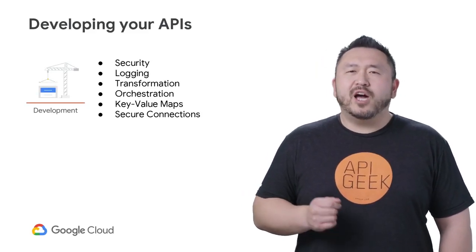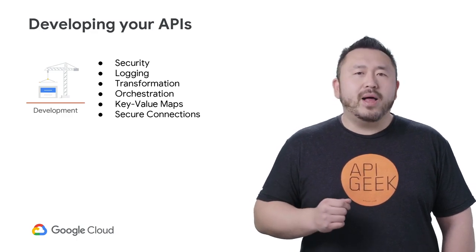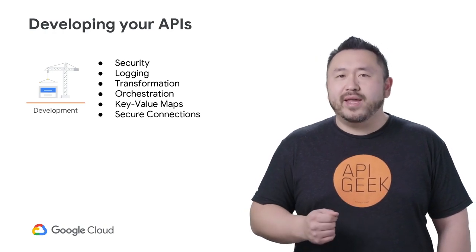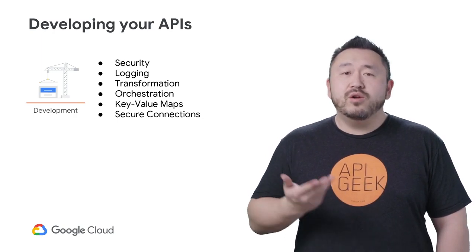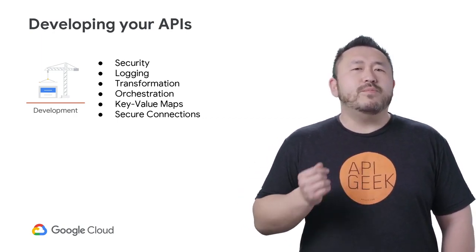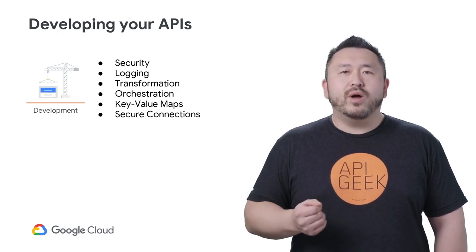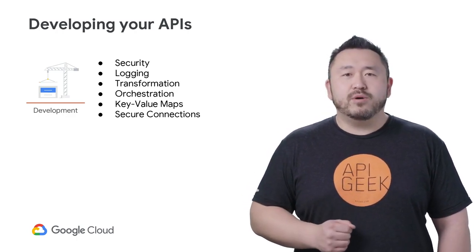In the development section of your API Playbook, document how you will facilitate security, as well as other patterns and policies which are required in the enterprise. Provide guidance on how user authentication will be managed, as well as any other policies for logging, transformation, or orchestration. These are often mandatory development guidelines, regardless of what functionality the API exposes.